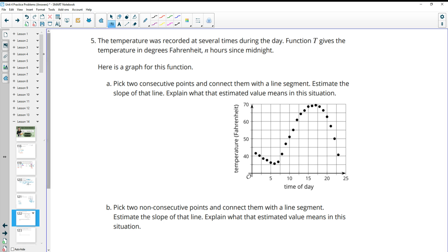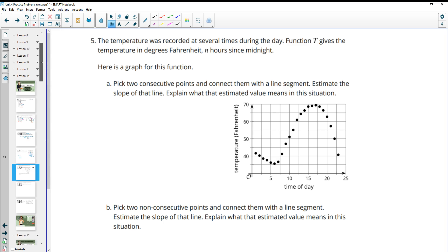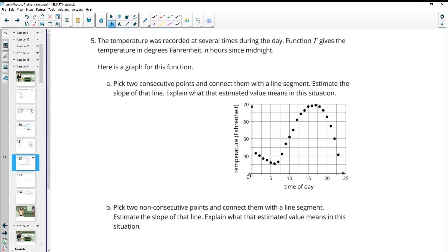Number 5, the temperature was recorded at several times during the day. Function t gives the temperature in degrees Fahrenheit, n hours since midnight. Finally, here's the graph for this function. Pick two consecutive points and connect them with a line segment and then estimate the slope. Explain what the estimated value means in this situation.